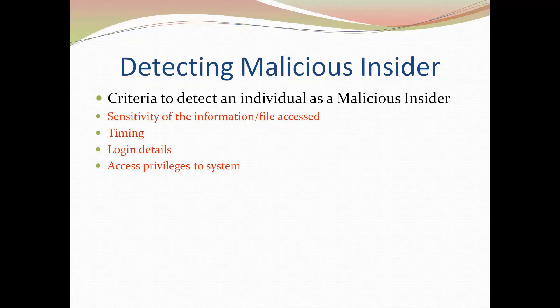Another criterion is whether the person had access privileges to that system. If a sensitive file is on another system and the person was not supposed to access it but did — what was the motive? That can be one of the criteria to consider an individual as a malicious insider. All these criteria can be taken into consideration to detect someone as a malicious insider.